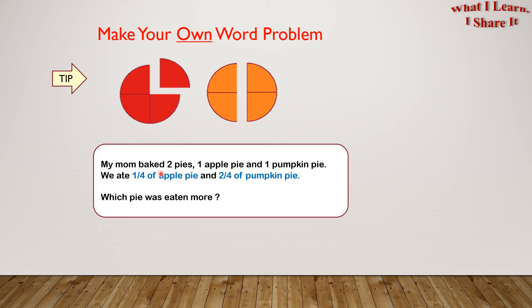My mom baked two pies, one apple pie and one pumpkin pie. We ate one-fourth of the apple pie and two-fourths of the pumpkin pie. Which pie was eaten more? In this way, you can create and solve your own word problems.